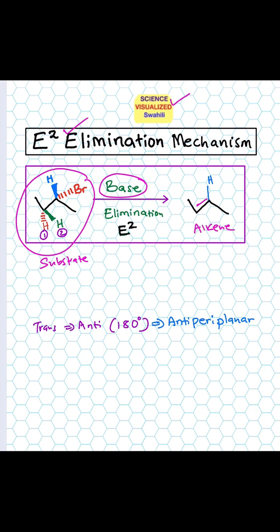It's very important for E2 elimination that the leaving group, in this case bromine, and the hydrogen to be abstracted must have what we call anti-arrangement, so anti-periplanar. For example, if you have something like this: